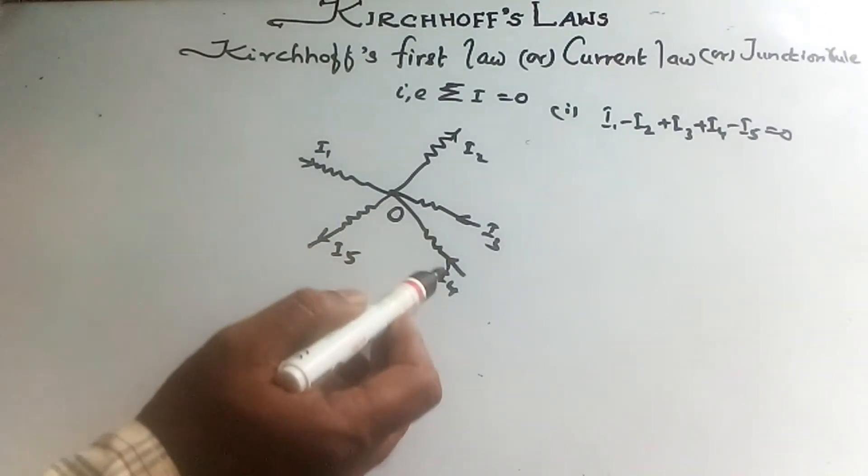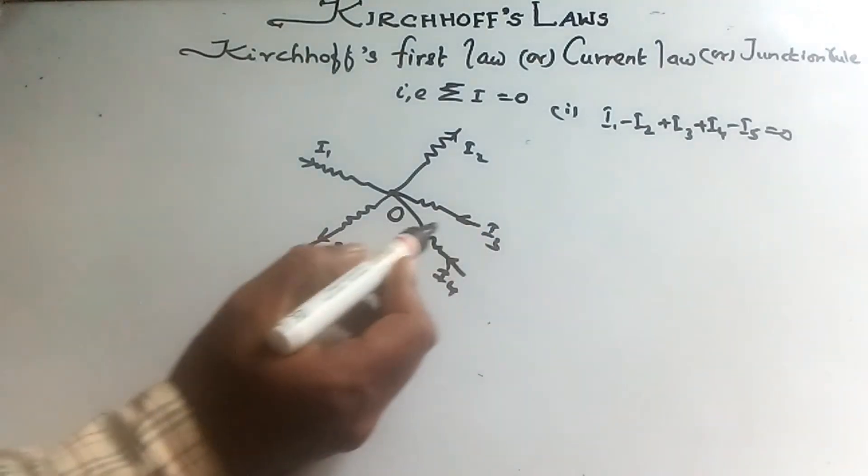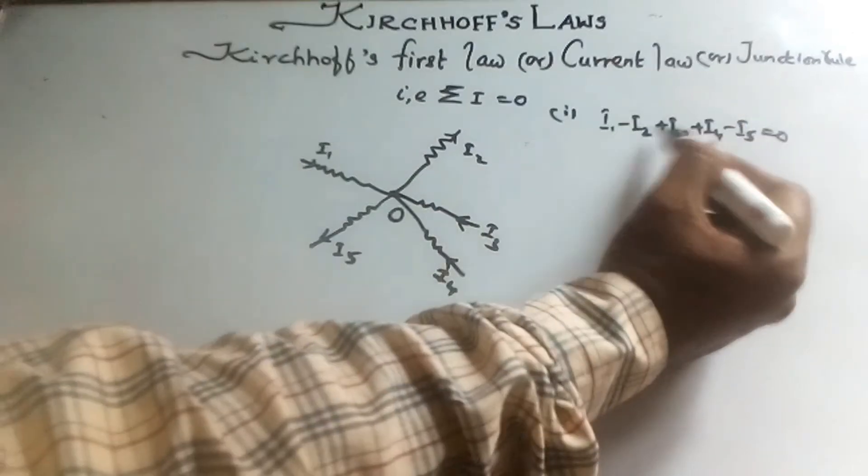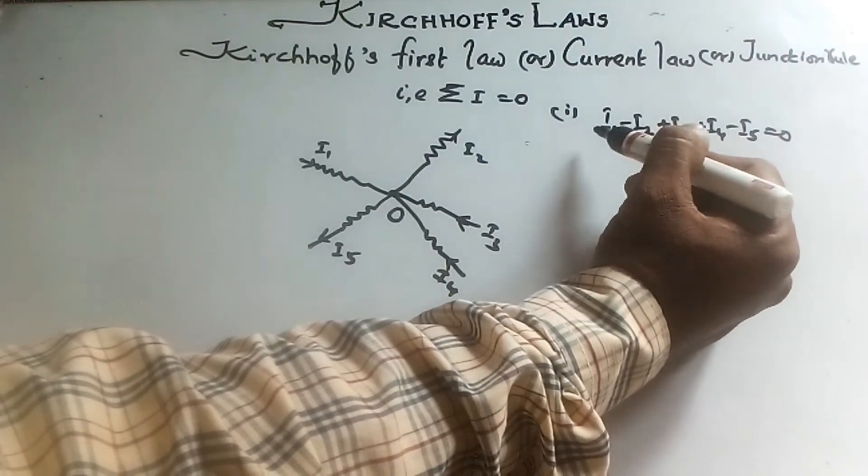Here I1, I3, I4 are positive since they are going towards the junction, while I2 and I5 are negative since they are leaving from the junction.